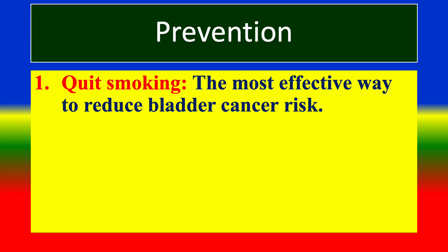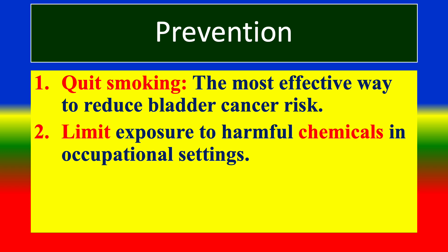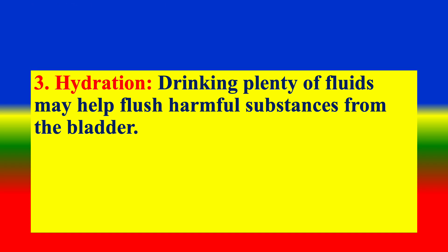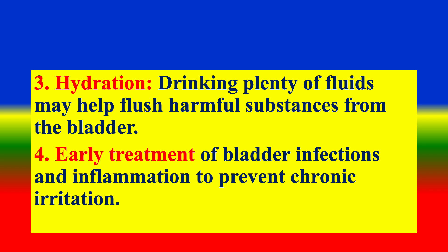Prevention: 1. Quit smoking — the most effective way to reduce bladder cancer risk. 2. Limit exposure to harmful chemicals in occupational settings. 3. Hydration — drinking plenty of fluids may help flush harmful substances from the bladder. 4. Early treatment of bladder inflammations to prevent chronic irritation.